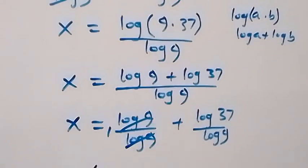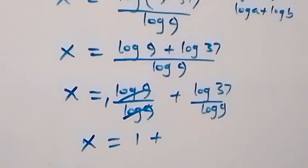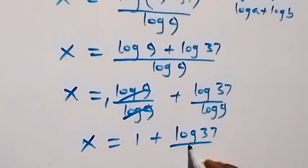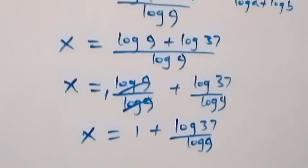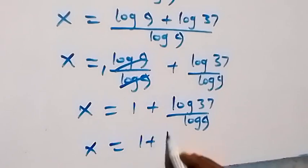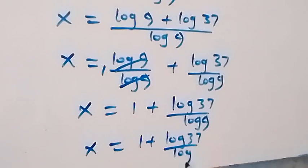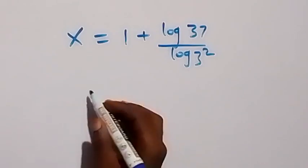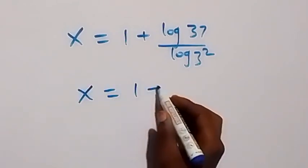So we have x equals 1 plus log(37) over log(9). By the change of base rule, this is log₉(37). Also, 9 can be written as 3 squared, so we have x equals 1 plus log(37) over log(3²).